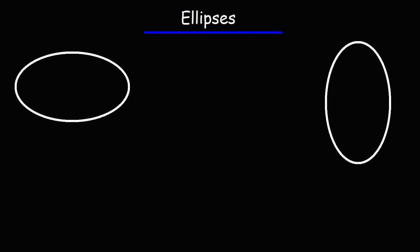In this video we're going to focus on ellipses. We're going to talk about how to graph an ellipse and also how to find the coordinates of the vertices and the foci of the ellipse. On the left we have an ellipse with a horizontal major axis. On the right the major axis is vertical.